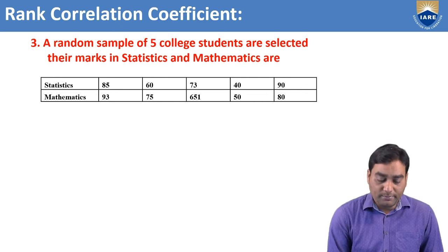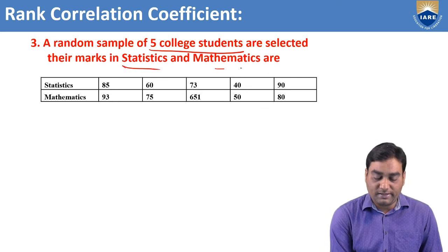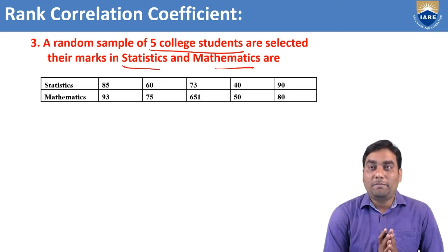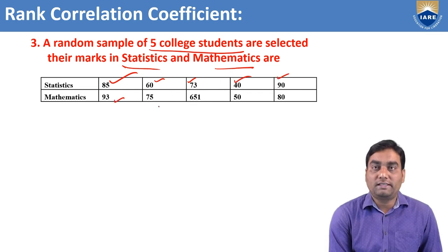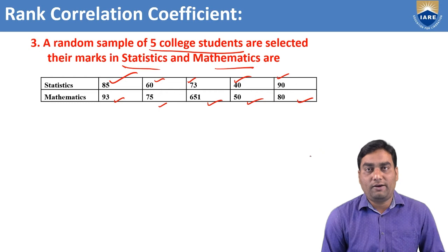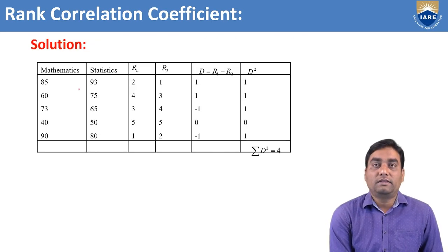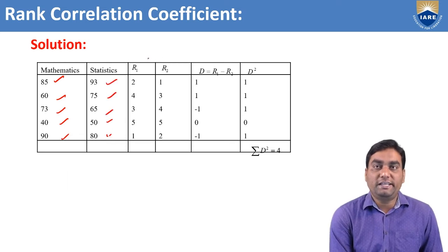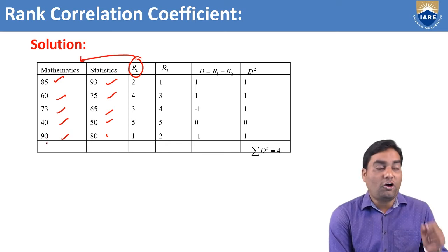Now, a random sample of five college students are selected. Their marks in statistics and mathematics are given. Observe that ranks are not given — only the marks in statistics and the marks in mathematics are given. We do not have ranks. Now we need to allot the ranks according to their marks in both subjects.